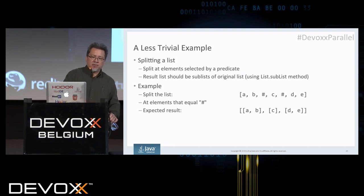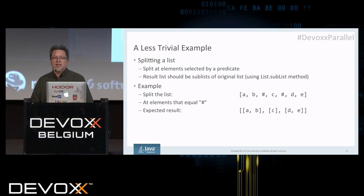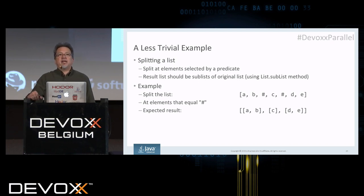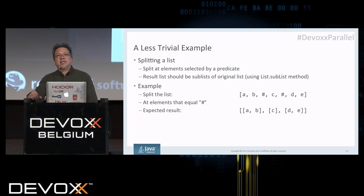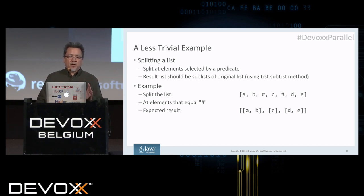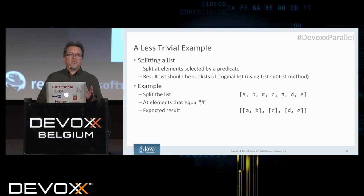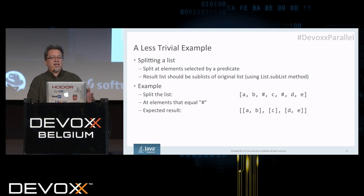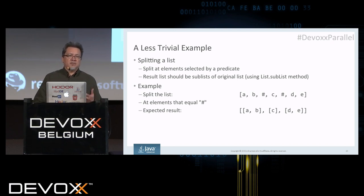Let's move on to the second example. It's actually pretty trivial, but somewhat less trivial than the first one. The problem statement is splitting a list. We have a list and a predicate that will match certain elements. The result should be a list of sublists bounded by where the predicate matches. For example: a, b, hash, c, hash, d, e — the result will be sublists of [a, b], then [c], then [d, e]. The predicate tells us where to do the splitting.